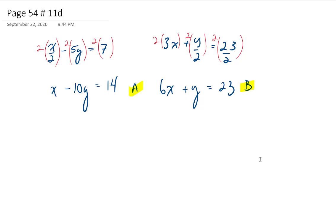So since we are trying to use elimination in this section, I'm going to multiply equation a by 6. If I do that, I get 6x minus 60y equals 84. And that is a times 6.